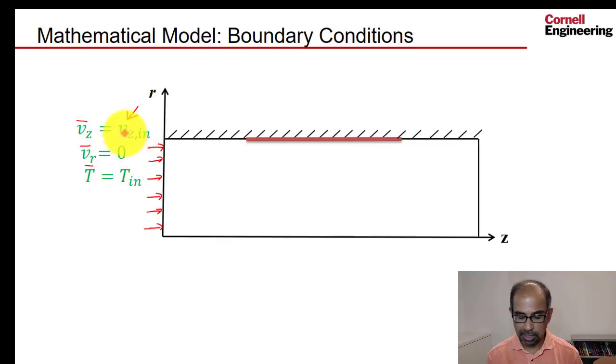So this velocity value is calculated to match the mass flow rate that one determines from the experiment. And similarly we know what is the temperature of the flow going in from the experiment.